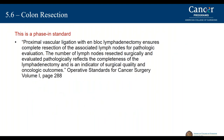Standard 5.6 follows the concept of synoptic reporting for cancer patients. This is also a phase-in standard and involves colon cancer reporting. The important thing about colon cancer operations is that proximal vascular ligation with removal of the appropriate lymph nodes is vitally important. The number of lymph nodes is important as a quality indicator when reviewed by the Cancer Committee. The Operative Standards for Cancer Surgery, Volume 1, will review all requirements for a successful colon resection and should be reviewed by surgeons and the Cancer Committee prior to the phase-in of this standard.